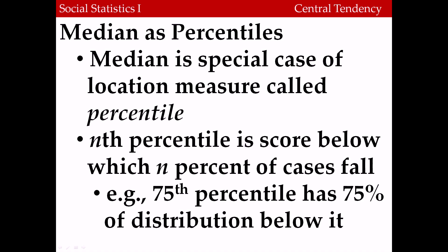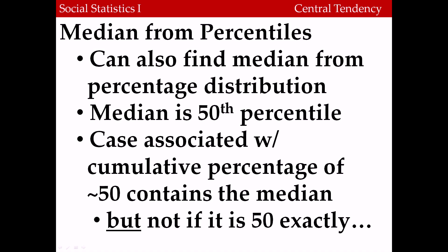The median is actually a special case of a more general measure called a percentile. A percentile tells us how much of the distribution falls at or below a given score. For example, the 75th percentile has 75% of the distribution below it and 25% above it. The median turns out to be the 50th percentile — the case associated with a cumulative percent of 50. The first case to include approximately 50% of the distribution is the median. However, if it lands exactly on 50, a slightly different procedure is required.